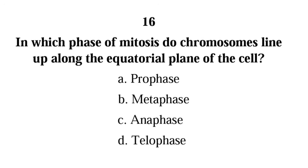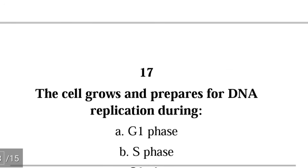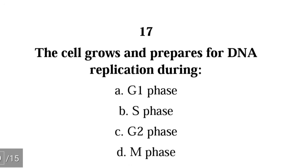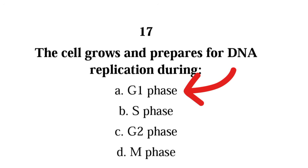Question 17: The cell grows and prepares for DNA replication during A) G1 phase, B) S phase, C) G2 phase, D) M phase. The correct answer is A) G1 phase. During G1, the cell grows, multiplies its organelles, carries out its activities, and then prepares for DNA synthesis in the next phase.